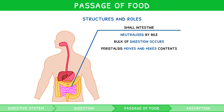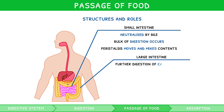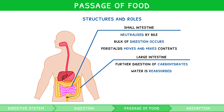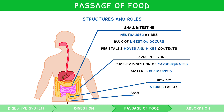The contents then enter the large intestine, where further digestion of carbohydrates by symbiotic bacteria occurs. In addition, water is reabsorbed, forming feces. Feces then enters the rectum, where it is stored. Digestion is now complete. Finally, the feces exits the body through the anus via a process known as egestion.